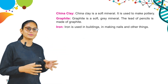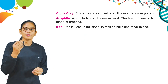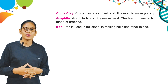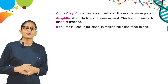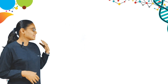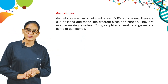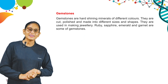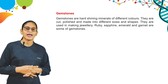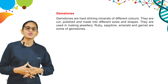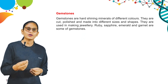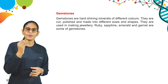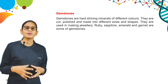Here is iron. Iron is used in buildings and making nails and other things. Here are gemstones. Gemstones are hard shining minerals of different colors. They are cut, polished and made into different sizes and shapes. They are used in making jewelry. Ruby, sapphire, emerald and garnet are some gemstones.